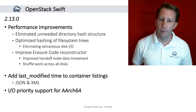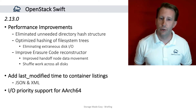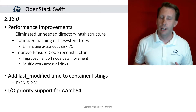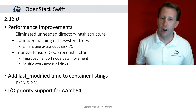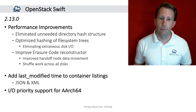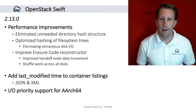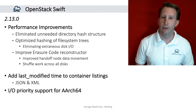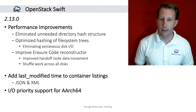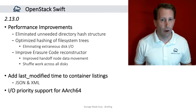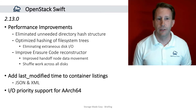Another focus of improvement for performance was in the erasure coding reconstructor. The reconstructor is responsible for checking and rebuilding erasure-coded data, with improvements to the handoff node data movement in case a primary node or drive has gone down, and the ability for the erasure code reconstructor to shuffle work across all disks for further performance improvements. Also in the OpenStack Swift release, the last modified time has been added to container listings, saving developers from having to do a HEAD on individual objects, provided they request the listing via JSON or XML format. And last but not least, IOPriority support for ARC64, for all ARM enthusiasts, has been brought to OpenStack Swift in the 2.13 release.